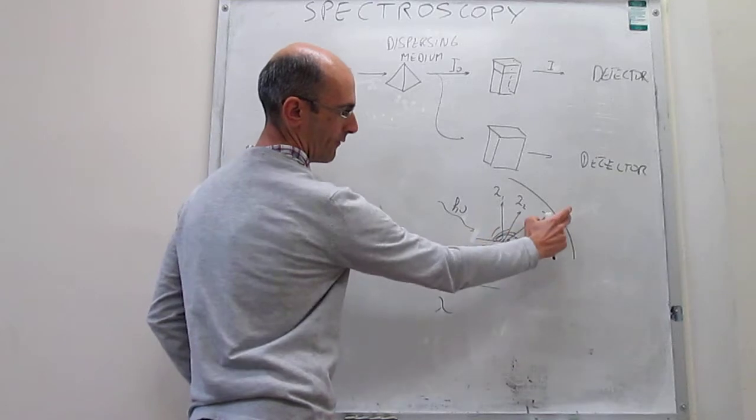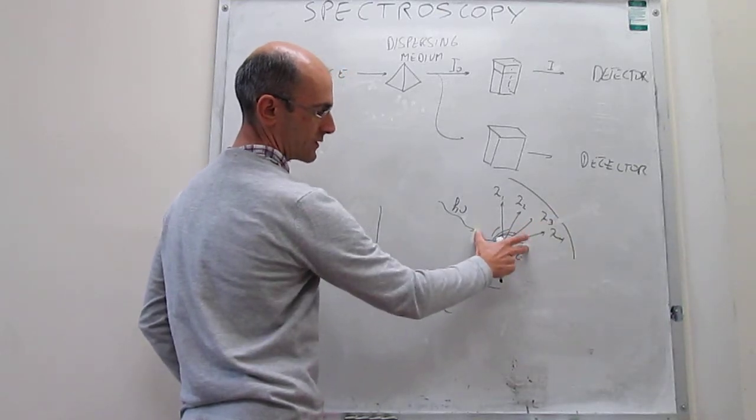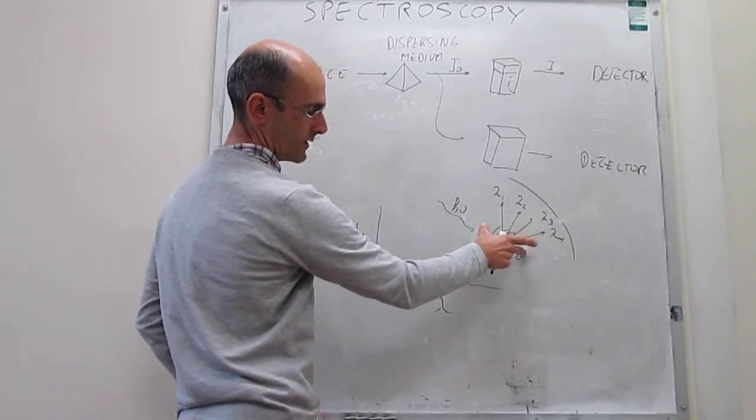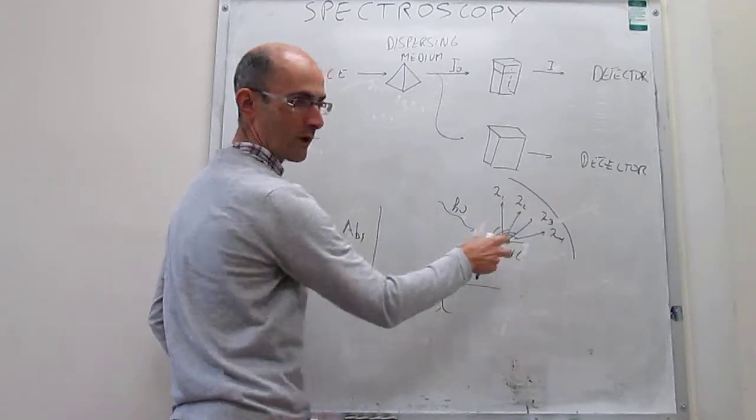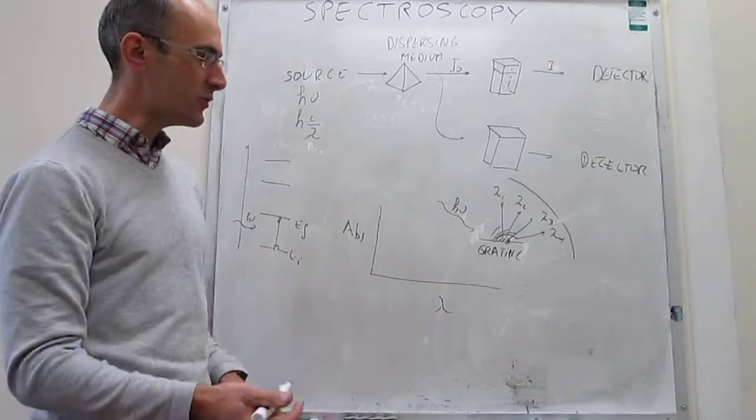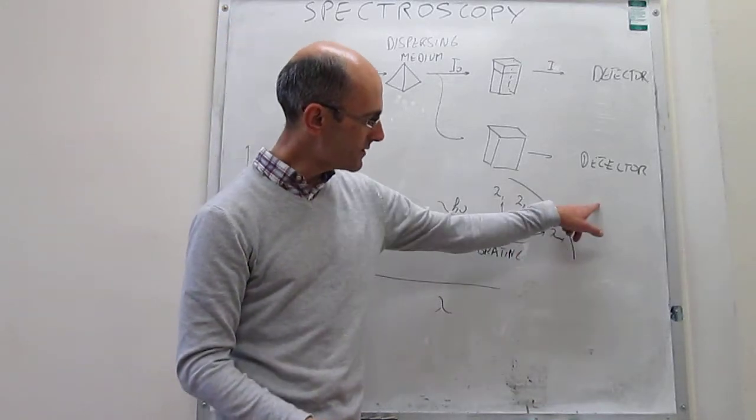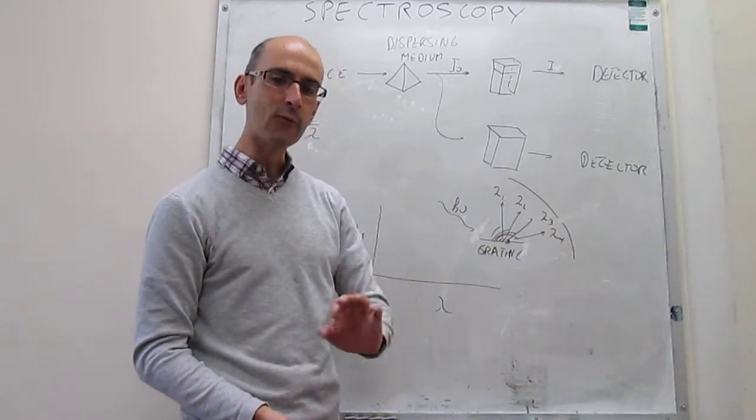First you have λ₄ coming out. If you rotate it this way, then λ₃ will come out. Rotate it a little bit more, then λ₂ will come out. Rotate it more, λ₁ will come out. And through that rotation, you can send radiation in this direction of a specific wavelength.